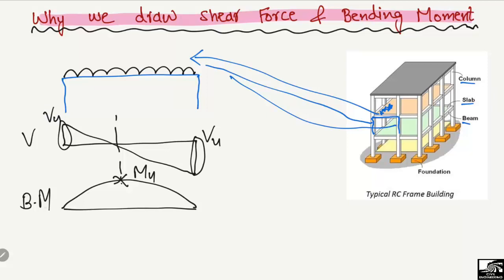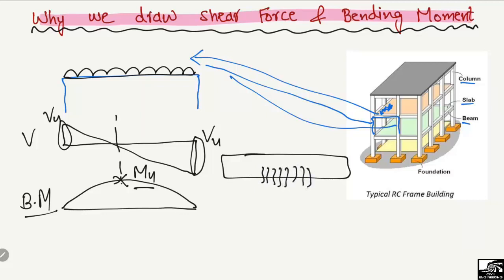First, let's discuss why we draw the bending moment diagram. This Mu will create, on this beam, tensile cracks inside the beam due to the maximum moment. We call such cracks tensile cracks because they are in the tension portion of the beam. To avoid these tensile cracks, we have to reinforce this beam by placing longitudinal reinforcement bars.